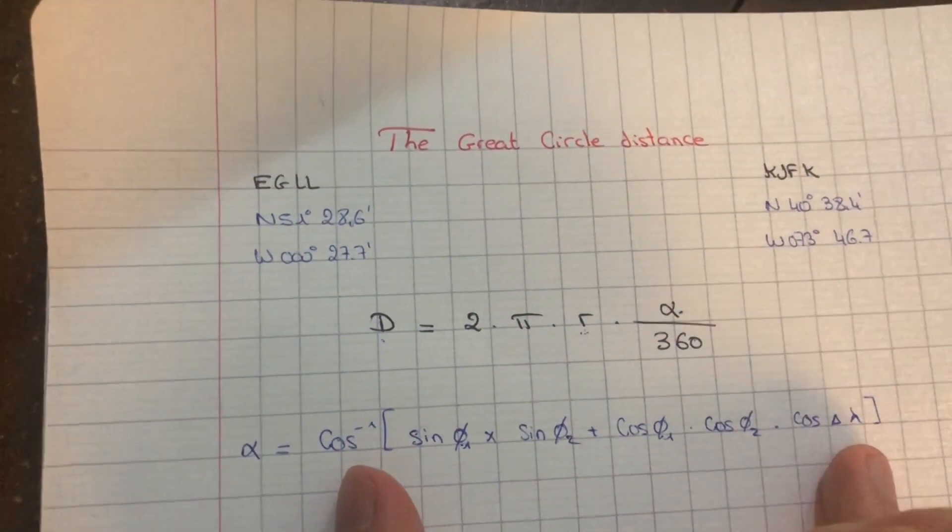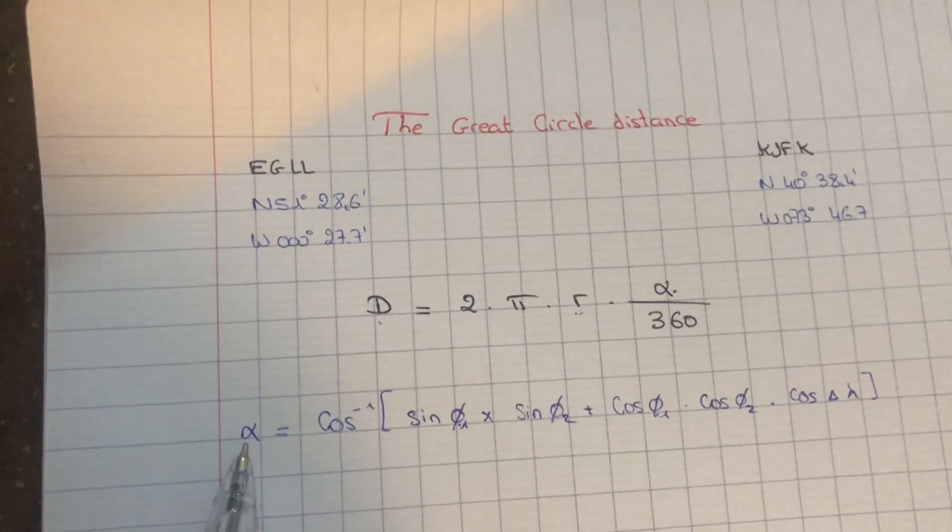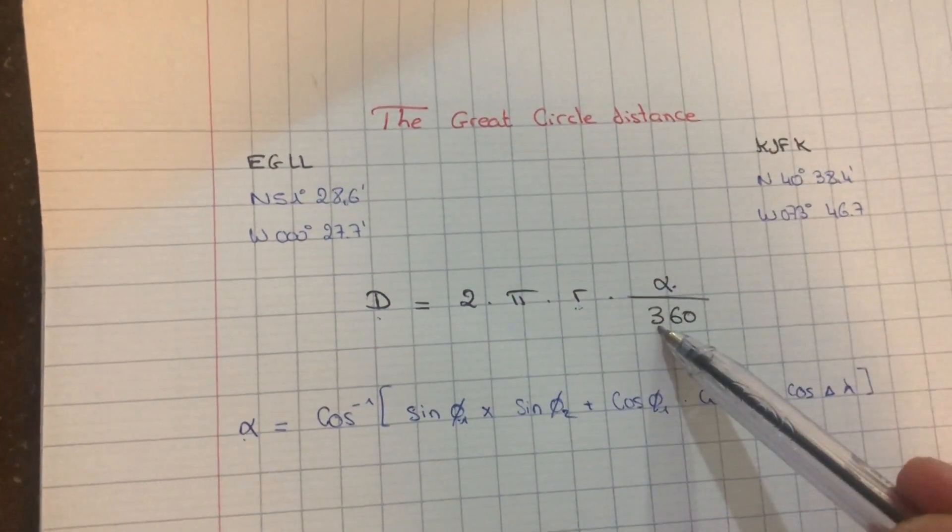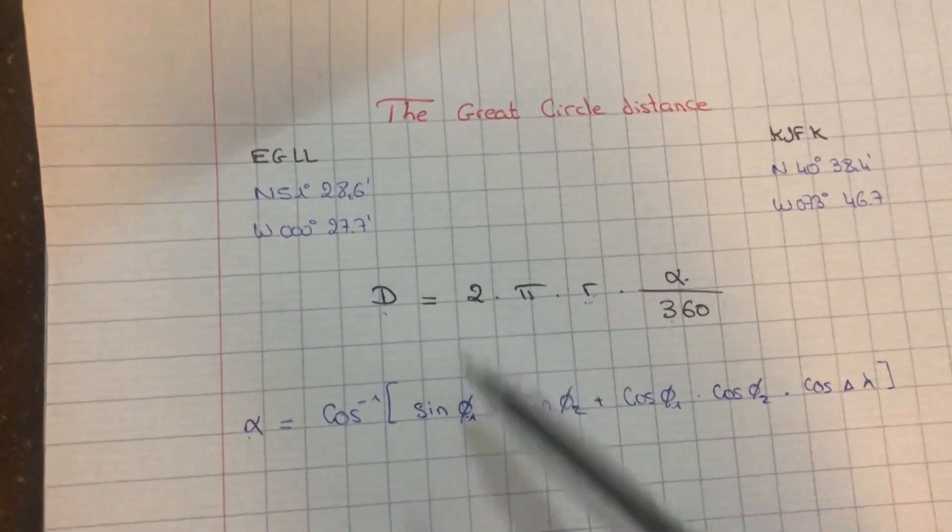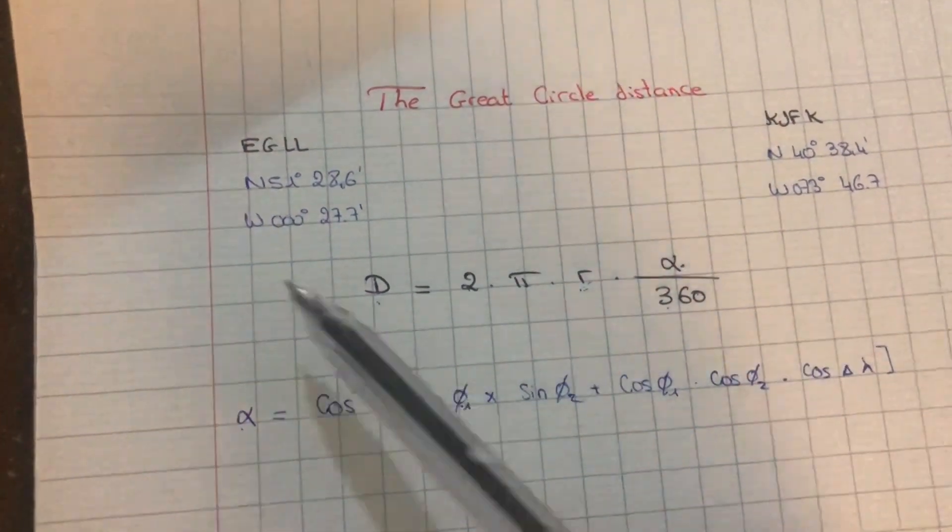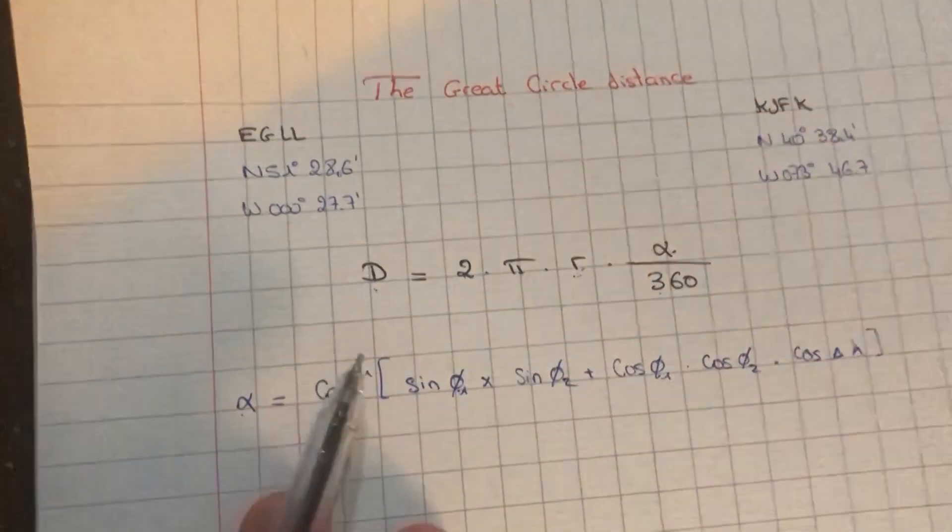So if we find the substandard angle, then we divide it by 360, times the radius of the Earth, times π, times 2, and we get the distance between these two points. So let's get right into it.